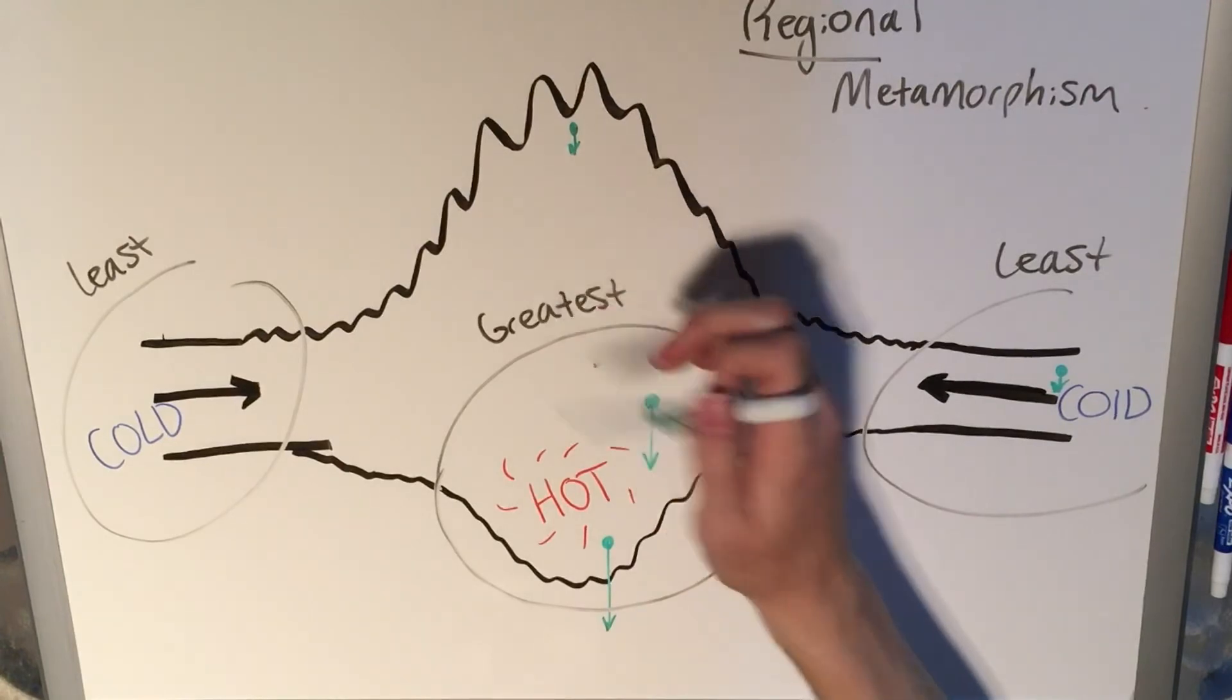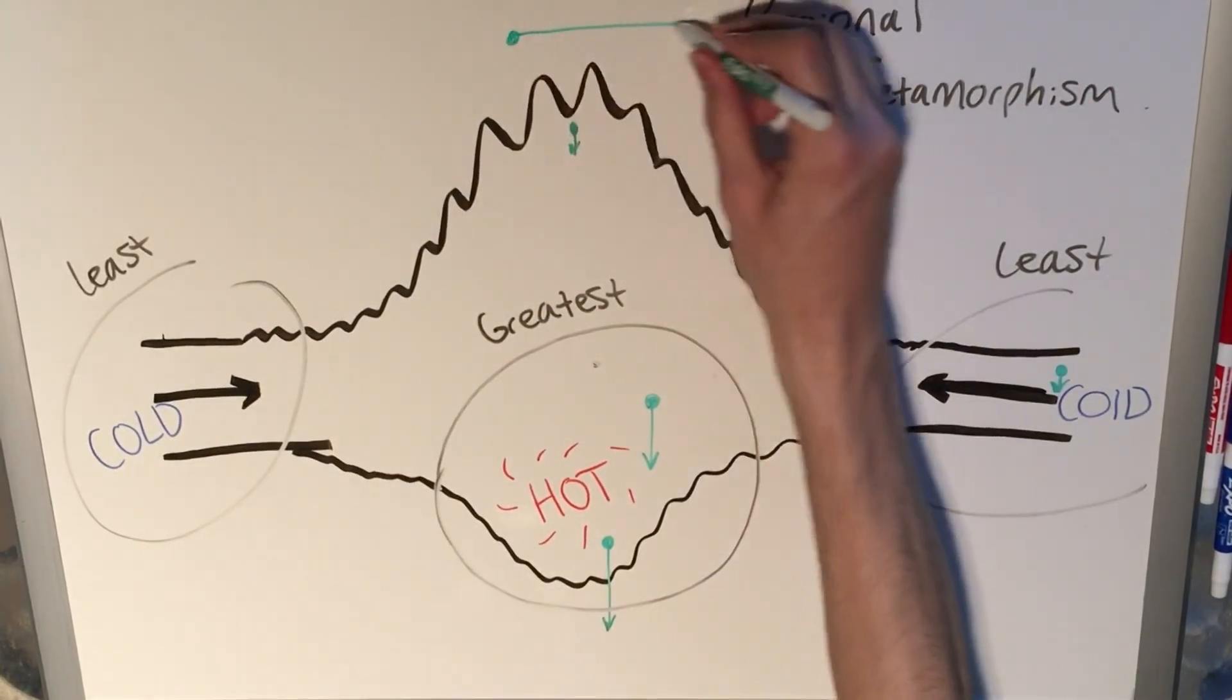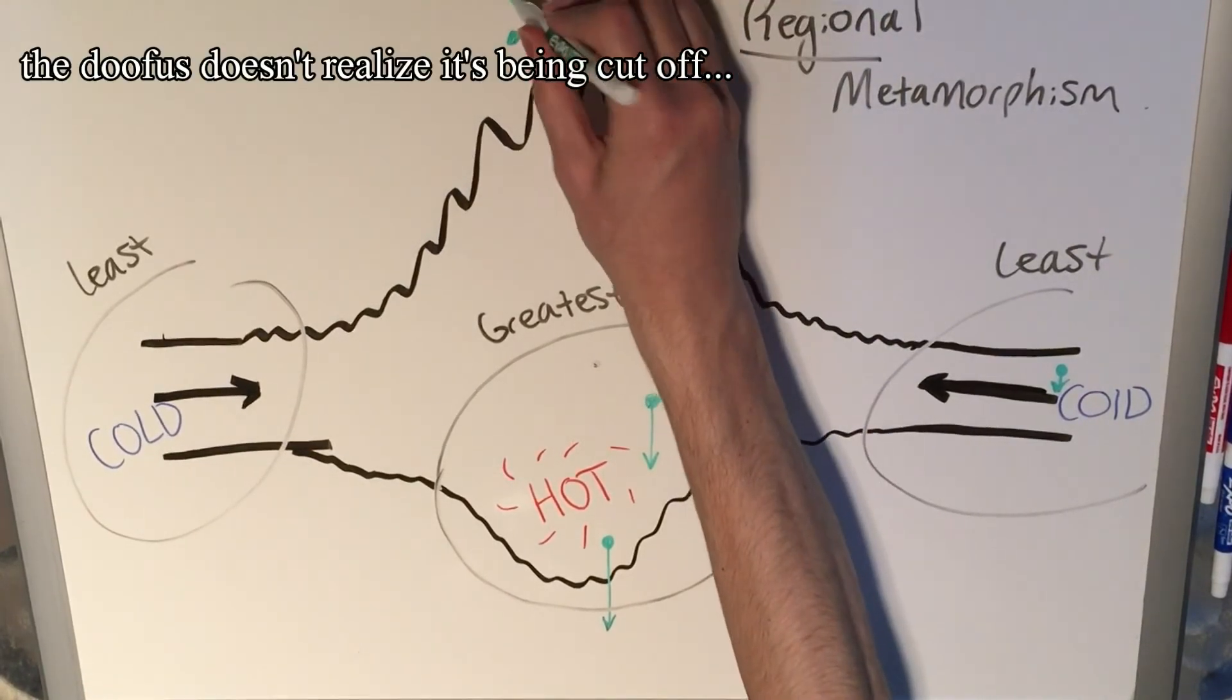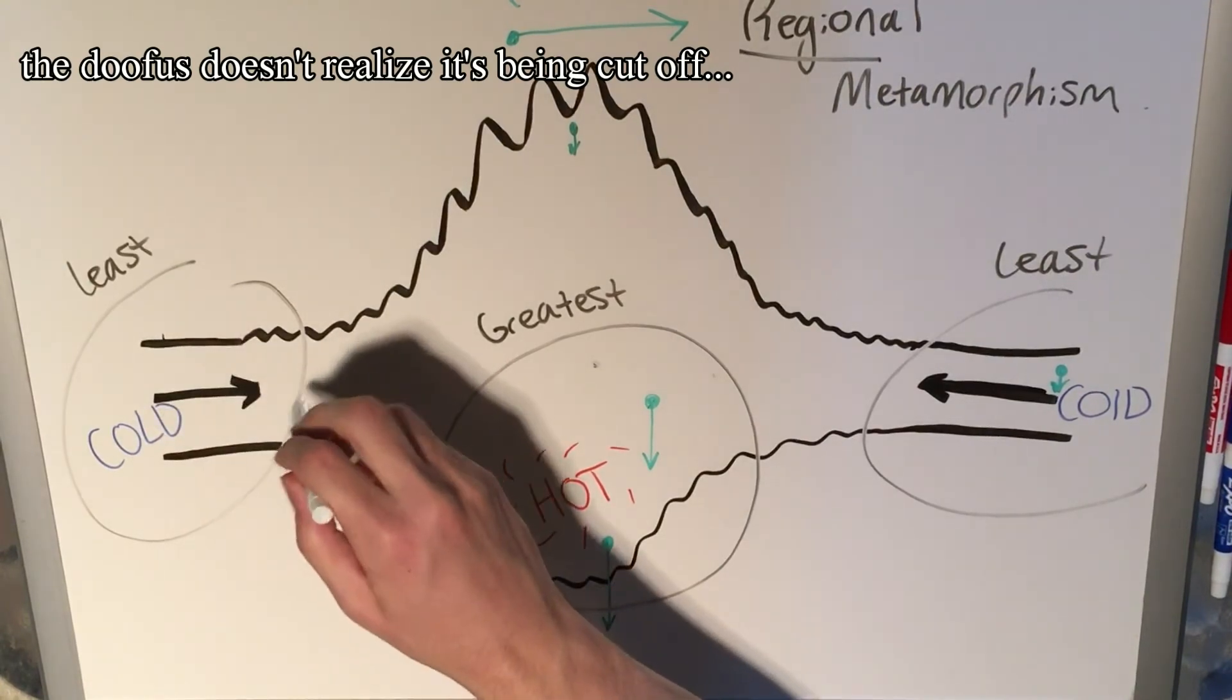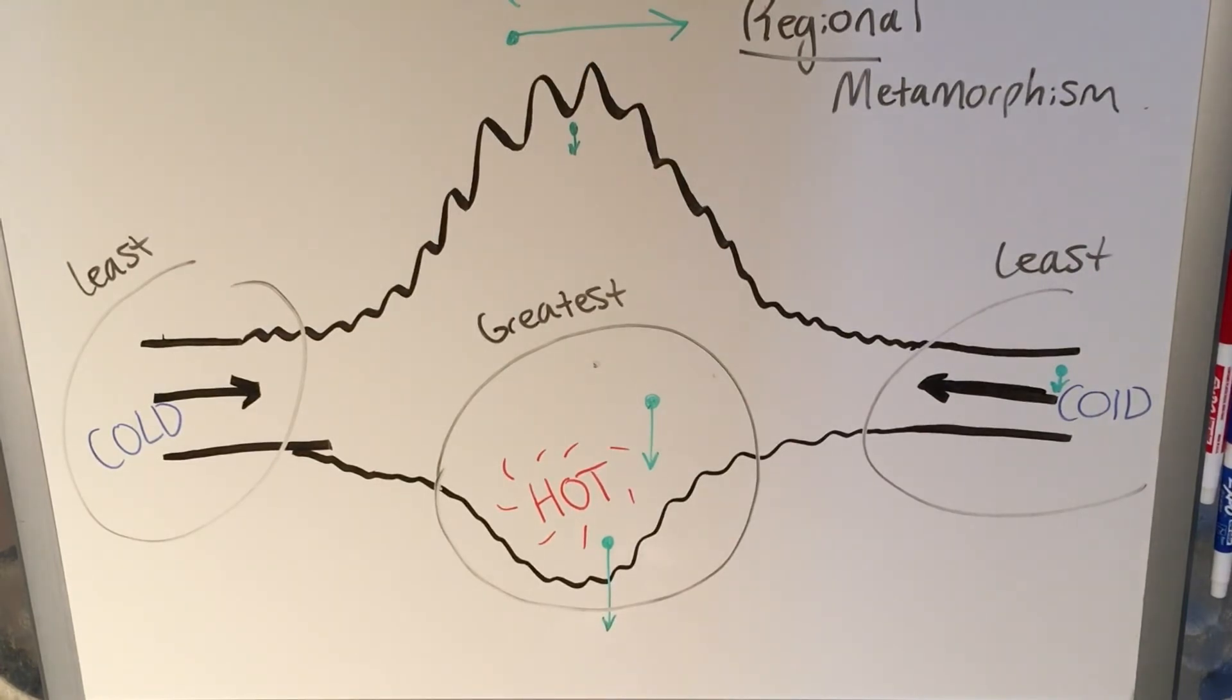But right here is at the center of the compression, which means that the forces acting against each other in these two directions, the compressional forces are going to be greatest. Meanwhile, out here, they're very small, once again, because you're on the margins. You're a greater distance from the center. So here, the confining pressure and the compressional forces are much smaller.